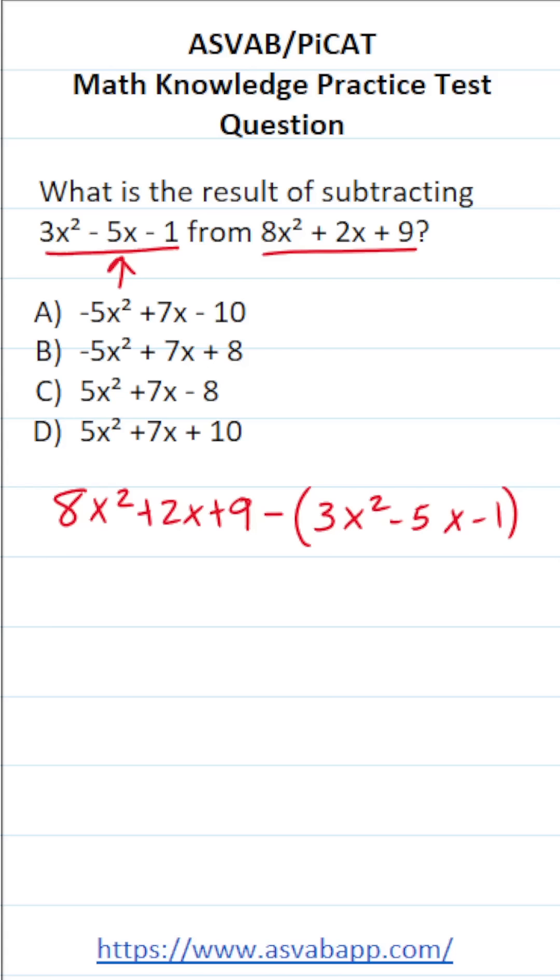Now we're going to take this negative sign and we're going to distribute it to each of these terms in this polynomial here, like so.